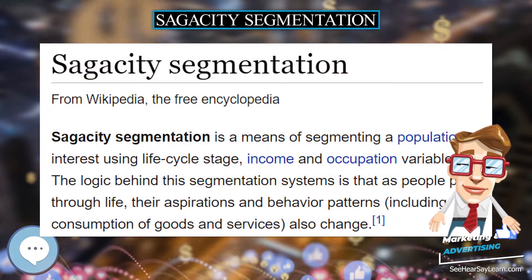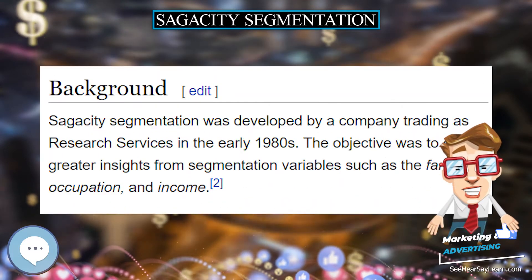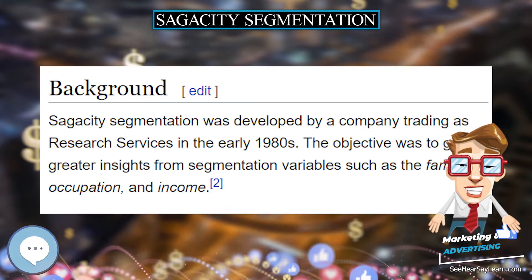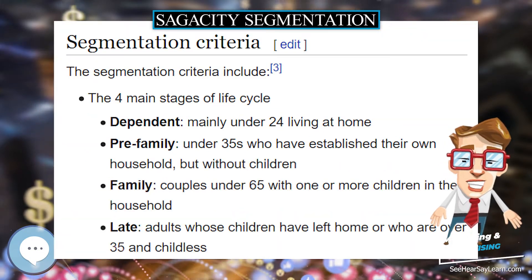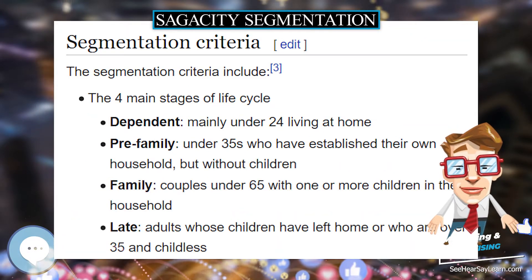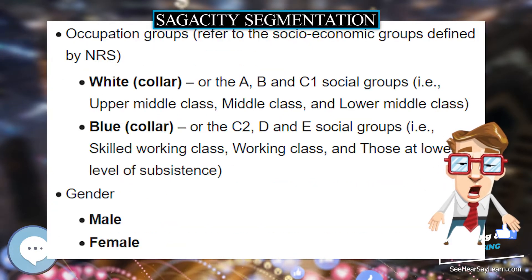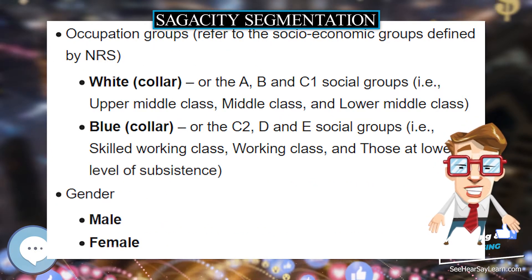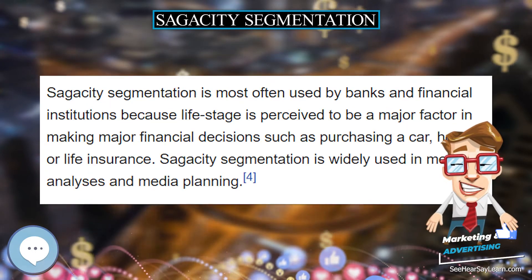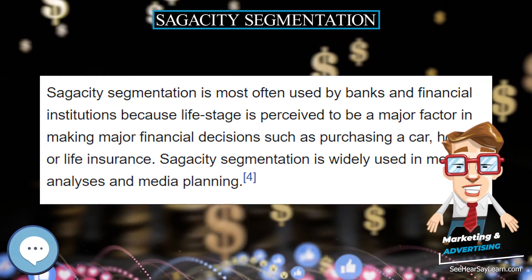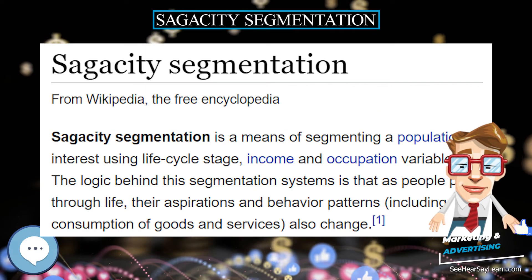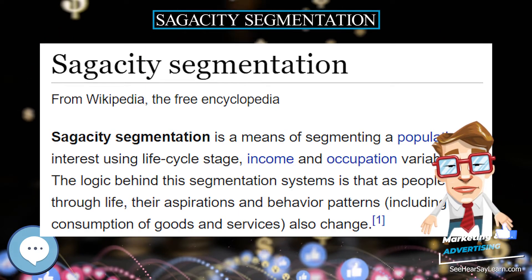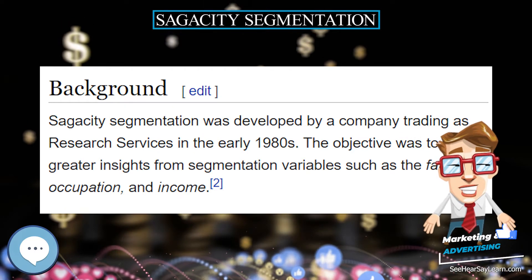Sagacity segmentation is a means of segmenting a population of interest using life cycle stage, income, and occupation variables. The logic behind this segmentation system is that as people pass through life, their aspirations and behavior patterns, including consumption of goods and services, also change.